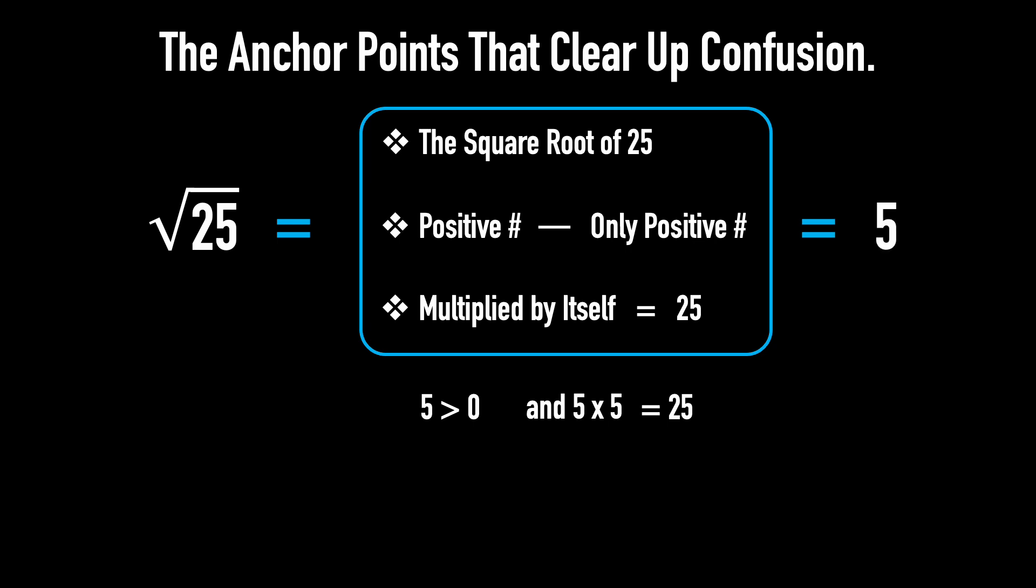Let's take two more examples. First, find the square root of 16. Because 4 is positive and 4 multiplied by itself gives 16, the square root of 16 is 4.